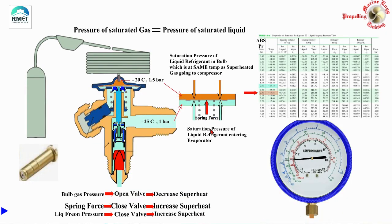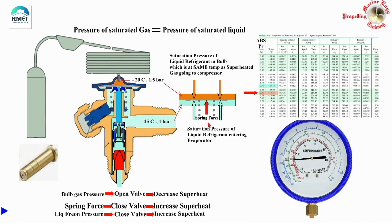So we have it all here: you have a force due to the saturation pressure of the liquid refrigerant entering the evaporator acting from above, and you have the force due to the saturation pressure of the liquid refrigerant in the bulb — which is at the same temperature as the superheated gas going to the compressor — acting from below. They both act on the same area, so the forces partially cancel out. There is also a third player — the spring force — which adds to the force exerted by the liquid refrigerant on the bottom of the diaphragm.